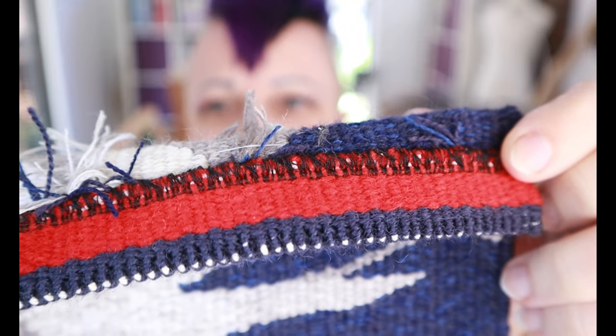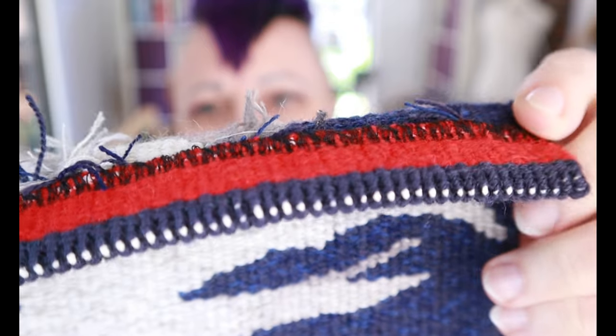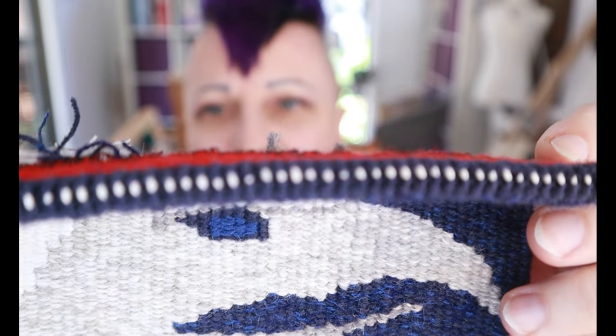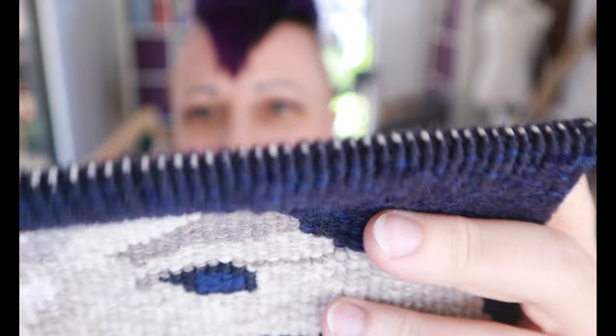Then if I turn it around, this is the hem. Can you see the white edge? That's the warp that's folded over. Now I'm going to show you how I do it.